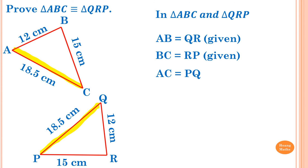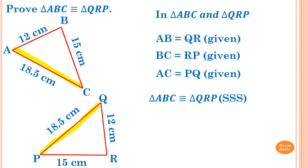Now we have three corresponding sides equal, so we can state: triangle ABC is congruent to triangle QRP. The rule is SSS because three corresponding sides are equal.